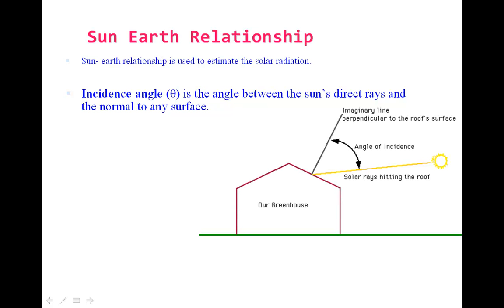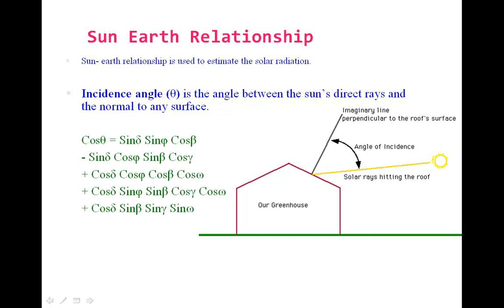The simplified relations of sun-earth geometry is shown in the mathematical form of the equation. So cos theta is equal to the function of delta, omega, phi, beta and gamma. It shows that theta is the function of all these phi angles.